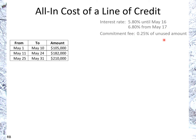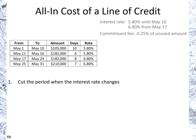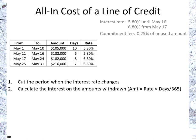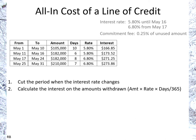Because we have a change in the interest calculation, we need to cut the period for when the interest rate changes. Between the 11th and the 16th we had $182,000; we separate that from the 17th to the 24th with the same amount but a different rate. We also calculated the number of days for each of those interest rate periods. The interest on the amounts withdrawn is simply the amount times the rate times the days divided by 365.